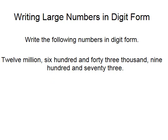Going to the next example, we are asked to write 12,643,973 in digit form. Our cue words are millions and thousands. So here we have 12,000,000 — leave a space — 643,000 — leave a space — 973.